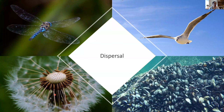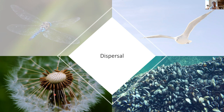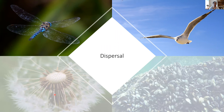Virtually all organisms disperse, but they vary greatly with respect to the fraction of their populations that disperse, typical dispersal distances, and the life stage at which dispersal occurs. Organisms also use different modes of dispersal. Some are passive dispersers, like plants or sessile marine organisms that disperse on wind or water currents. Others are active dispersers, which move across space on their own power. I focus on active dispersal in animals in my research.